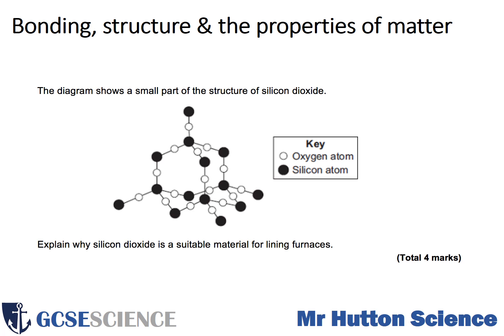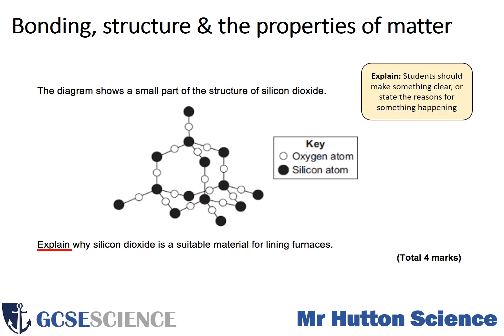The fourth question shows a diagram of a small part of the structure of silicon dioxide and asks you to explain why silicon dioxide is a suitable material for lining furnaces. This is again an 'explain' question — state the reasons why it's suitable. Even if you don't know what silicon dioxide is, its structure is shown in the picture, and that should give you clues. A furnace is very, very hot, which is an important hint. Pause the video, answer the question, and then look at the mark scheme.